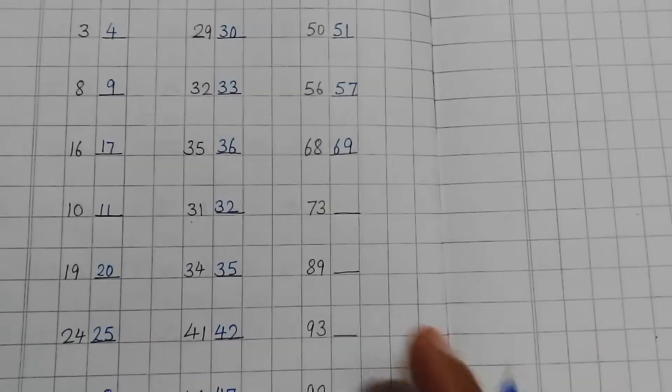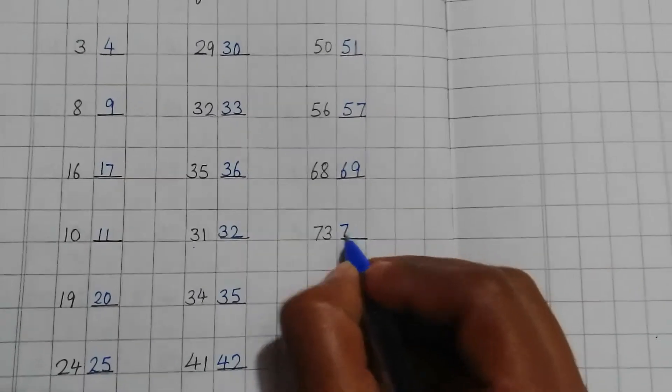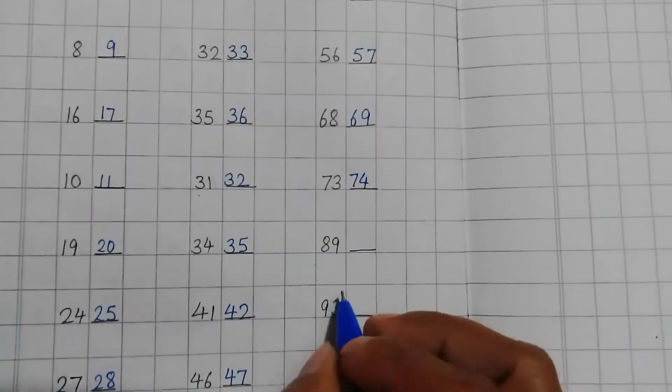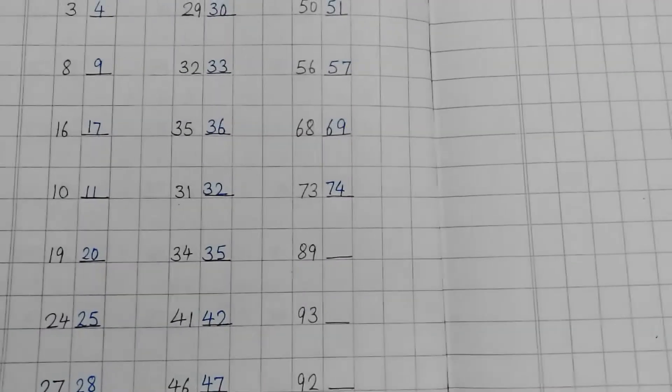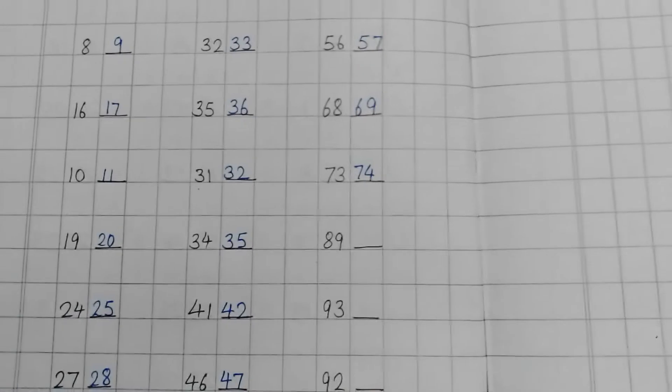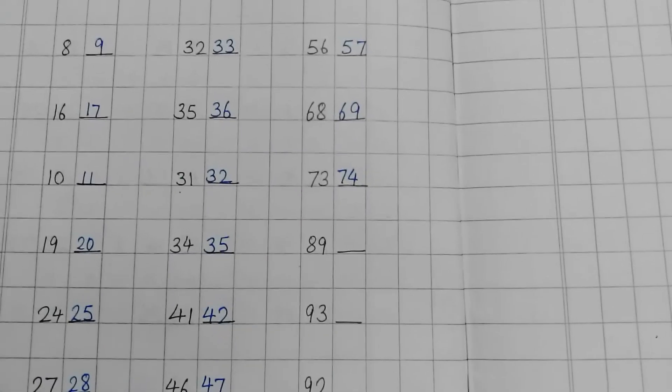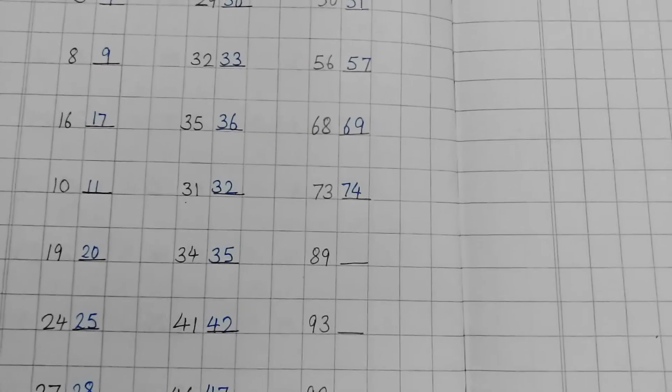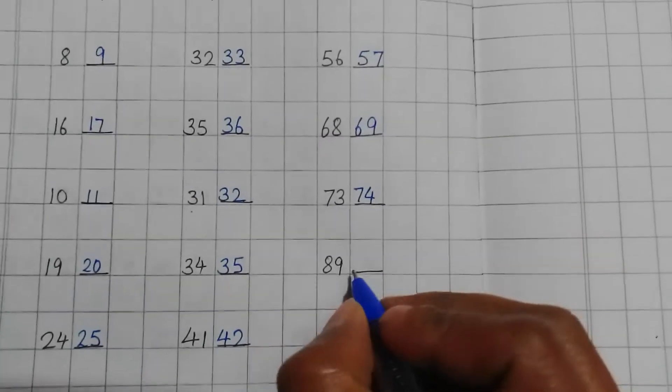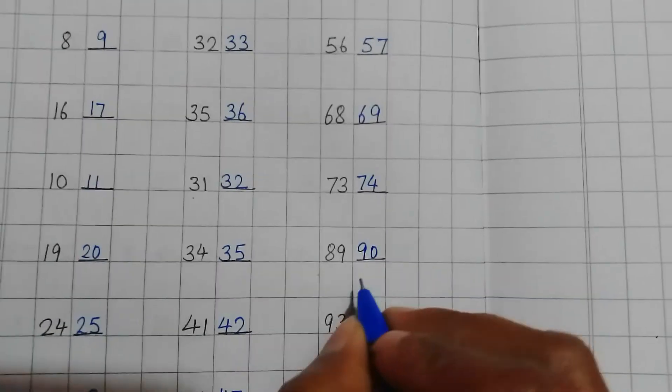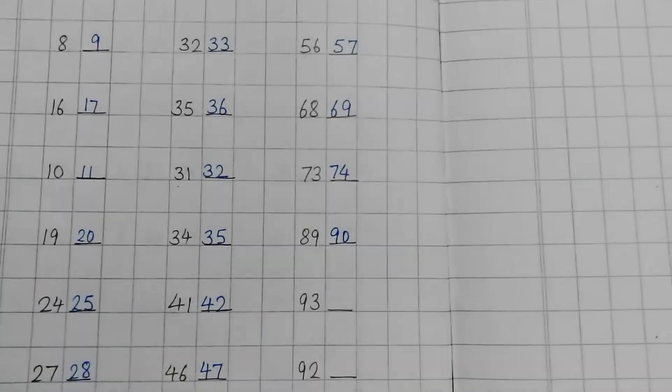73. So 74. 89. After 89. Tell me children. 89, 90. Okay. So 90 comes after 89.